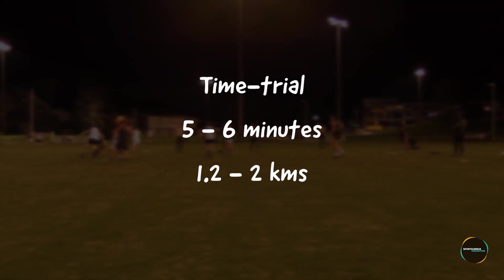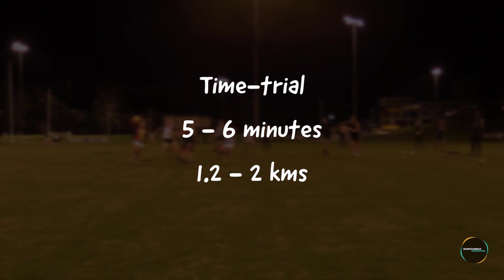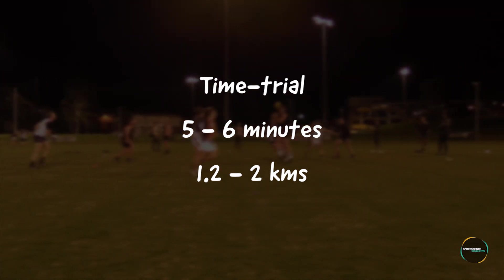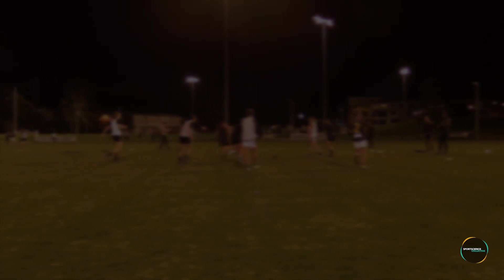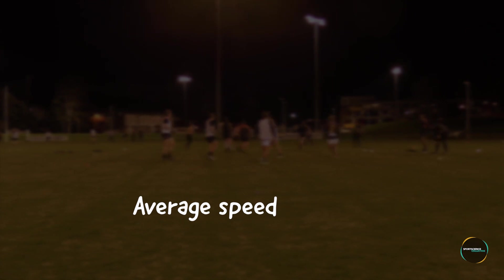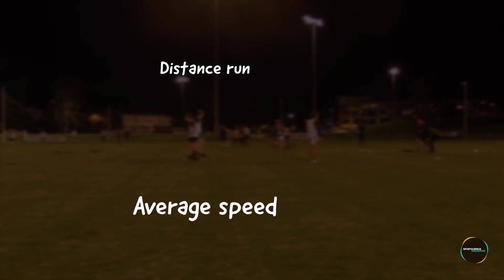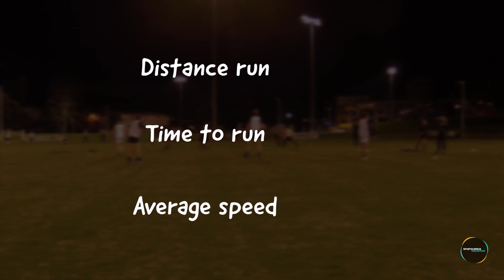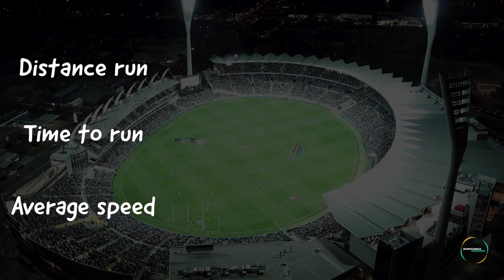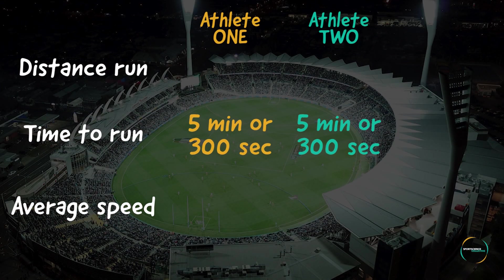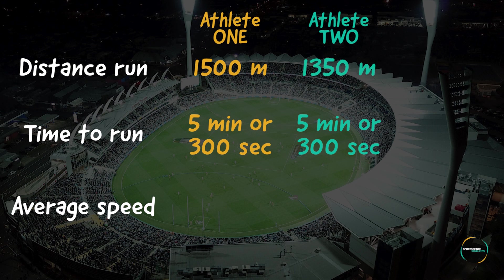Research tends to indicate that time trials taking approximately five to six minutes, or 1.2 to 2 kilometres, are most effective at determining an accurate MAS. To determine MAS you need to work out the average speed during the time trial, requiring both the distance run and the time taken. For example, take two athletes running a five minute time trial — athlete one covered 1500 meters while athlete two covered 1350 meters.